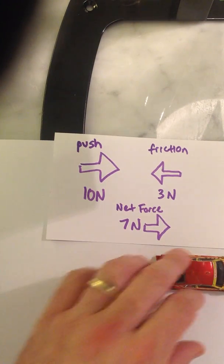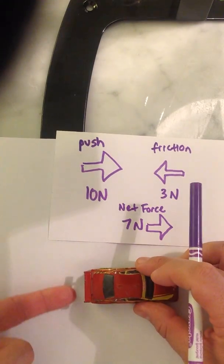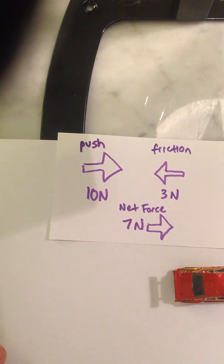So there's a reason why that is. When I push the car initially with 10 newtons of force, the car begins to be slowed down with the 3 newtons.